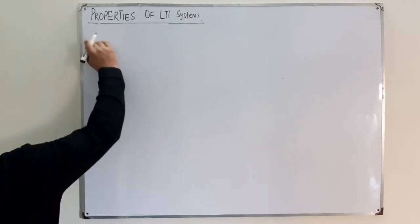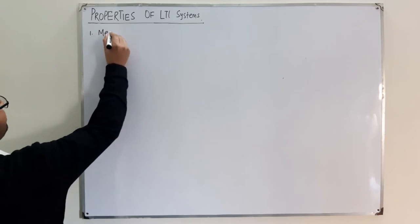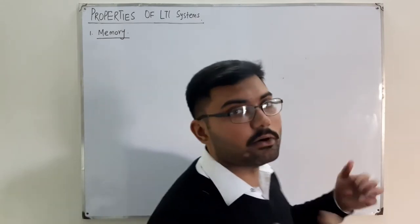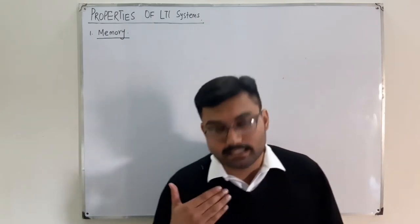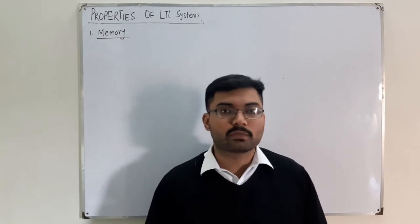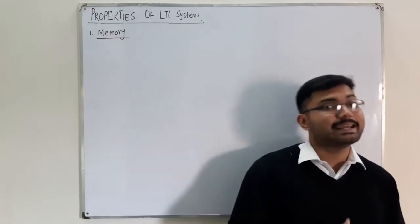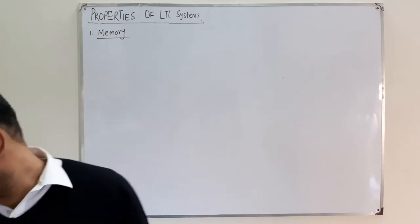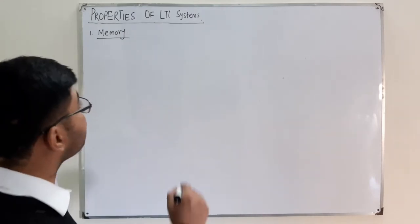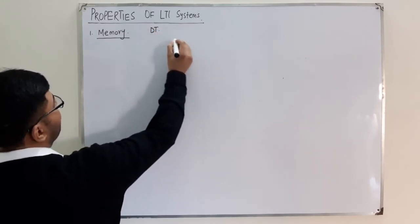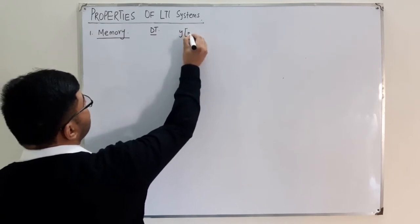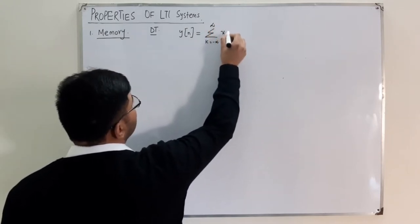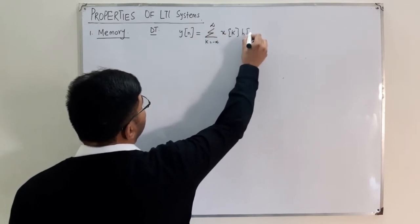The first property is memory. We know that an LTI system is completely characterized by its unit impulse response. So we will discuss these properties in relevance to the unit impulse response of the system. In the discrete time domain, the equation is: y[n] = Σ x[k] h[n−k], where k runs from negative infinity to positive infinity.